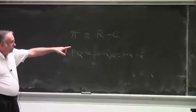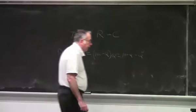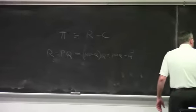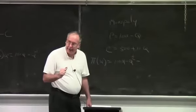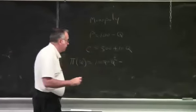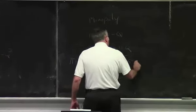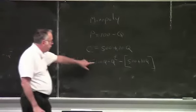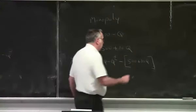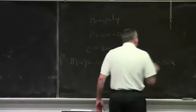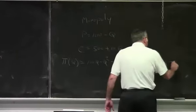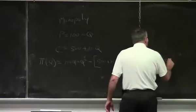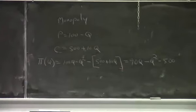Now, we've got revenue expressed in terms of q alone. Cost is already expressed in terms of q alone. So now it's easy to write profit as a function of q alone. π(q) is just R(q) minus C(q). And simplifying this expression, we have 90q minus q squared minus 500. That's as simple as we can make it. That is our objective function.